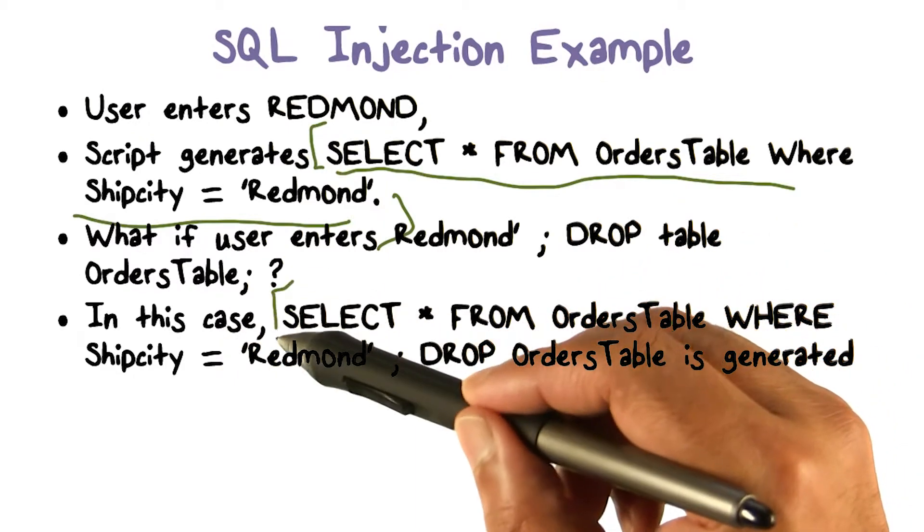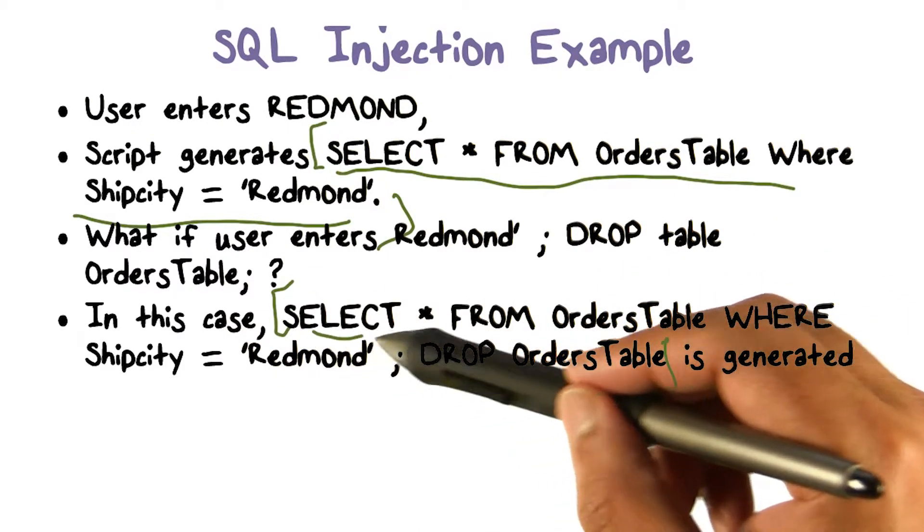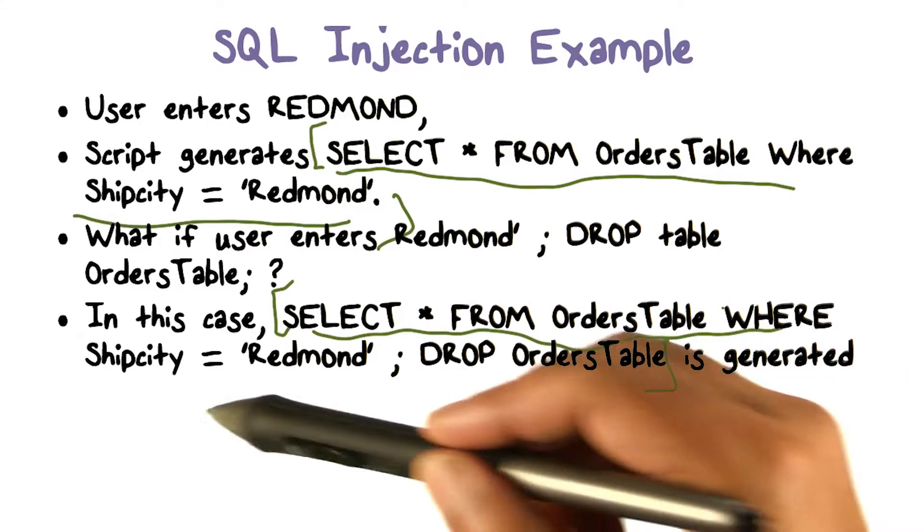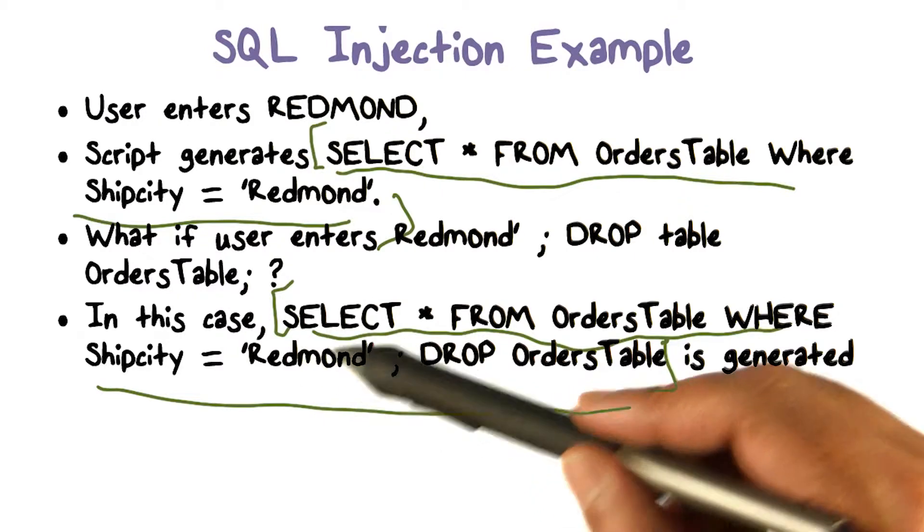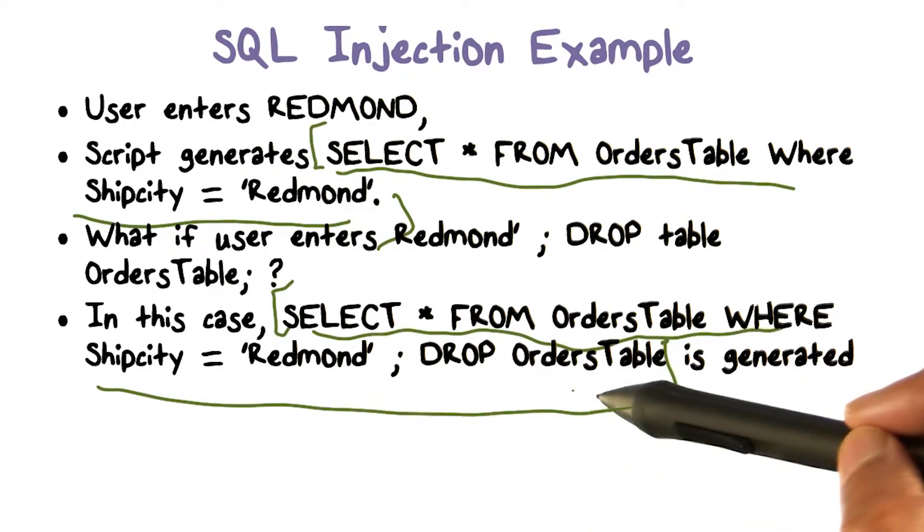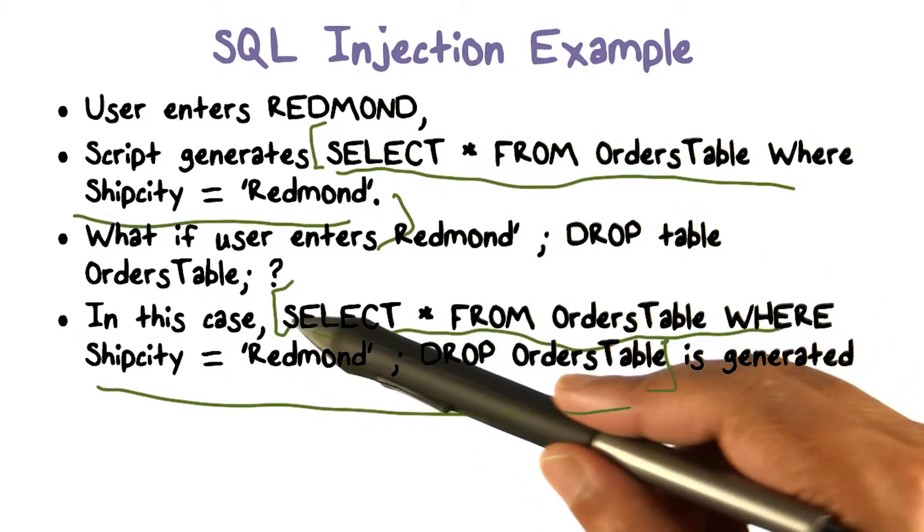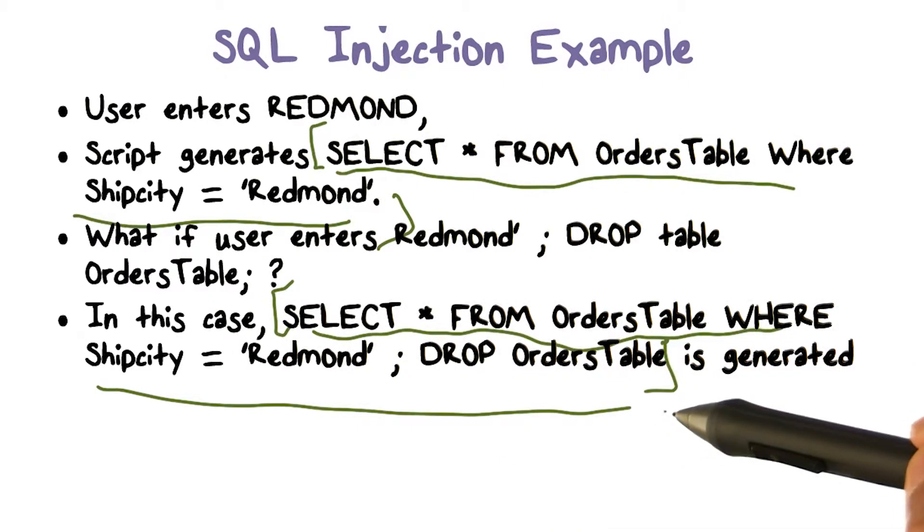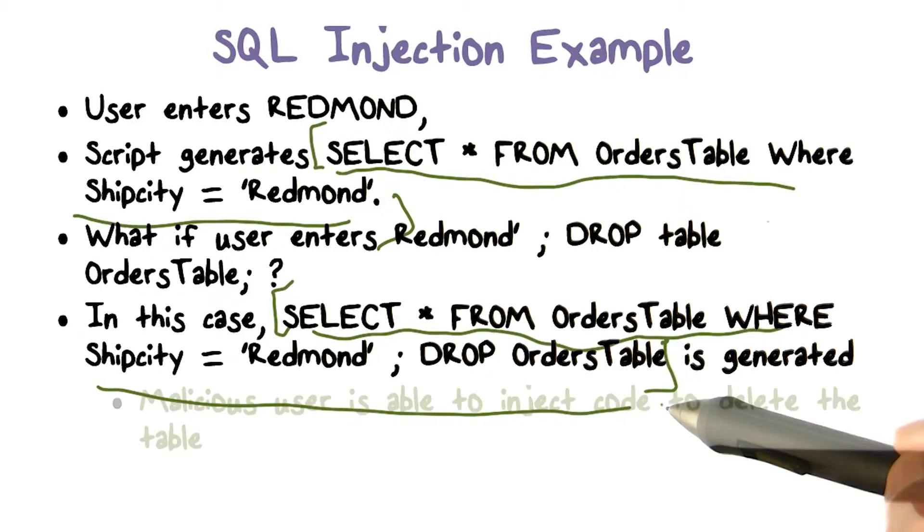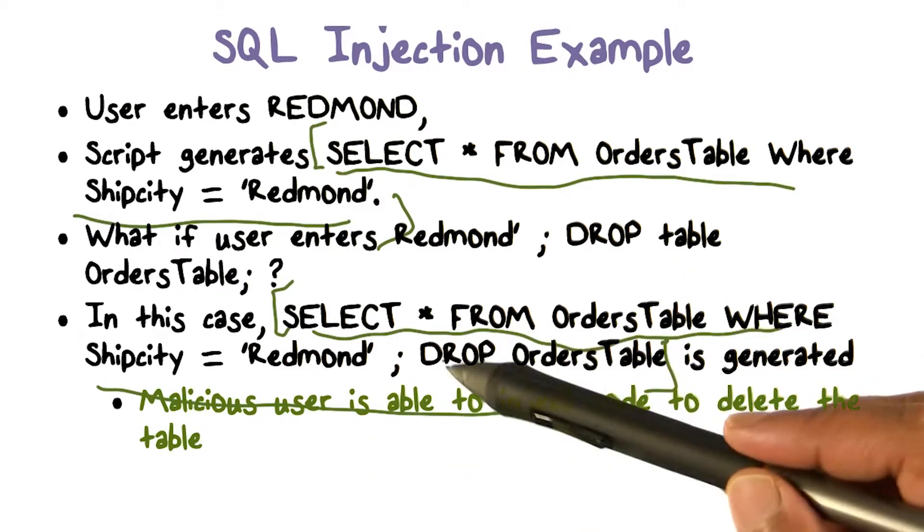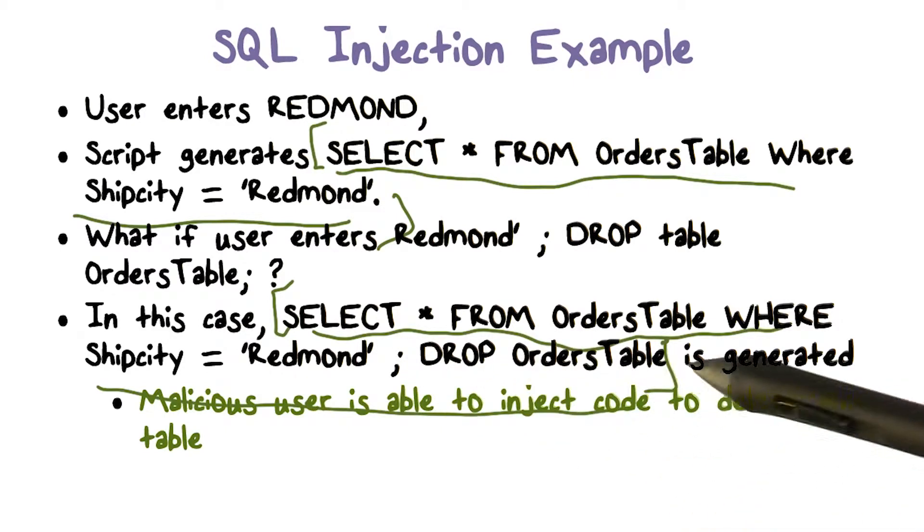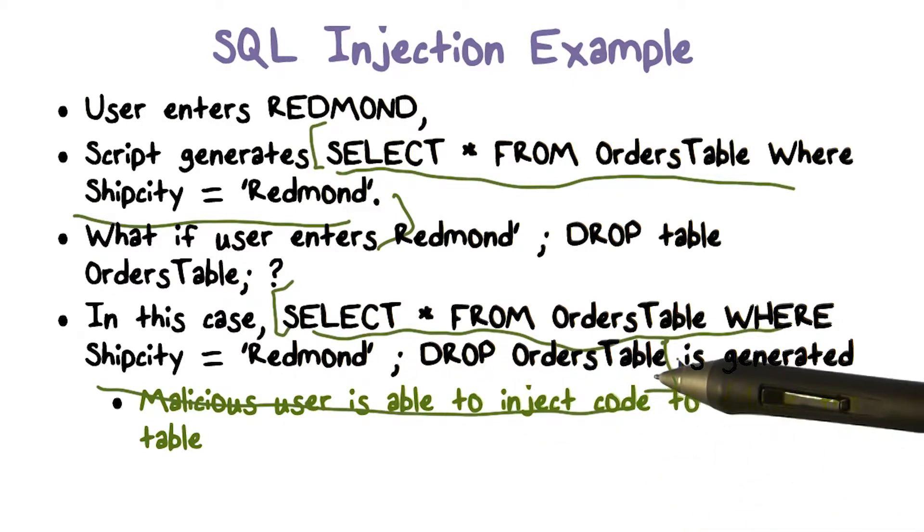the query that we're going to generate is going to be this. So this is what we got before, this is what we're going to get now because here we're going to replace the ship city variable, the value that we read is this one. So now essentially we're giving the database this query. And now you can see what really has happened here. The malicious user is able to inject code to delete the table. And that is what we see here after the semicolon, we see a DROP OrdersTable. And that's what we generate. And this will result in deletion of this table. So this is the injection.